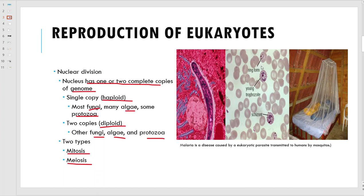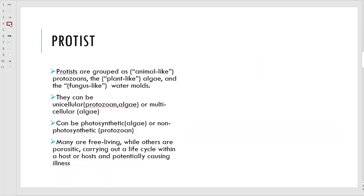There's the malaria falciparum infecting those white cells, and you can see some in the red cells. That's the way malaria infects people - it's a protozoan that gets into the blood through a mosquito bite. Protozoans and protists are animal-like; the plant-like are going to be the algae, and fungus-like are the water molds.